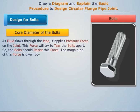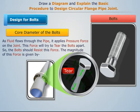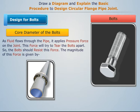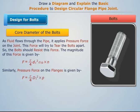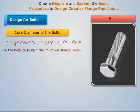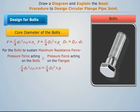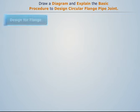As fluid flows through the pipe, it applies a pressure force on the joint. This force will try to tear the bolts apart, so the bolts must resist this force. The pressure force on the flanges is given by a formula where D1 is the effective diameter on which the fluid pressure acts. For the bolts to sustain maximum resistance, the pressure force acting on the bolts must be greater than or equal to the pressure force acting on the flanges. Thus, the core diameter of the bolts can be determined.